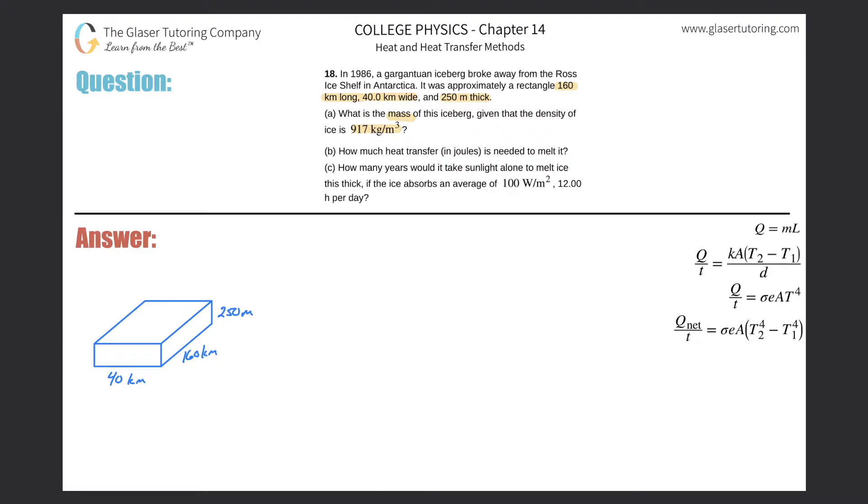Alright, so just recall the simple density formula. Density equals mass divided by volume. They told us the density of ice - the mass is in kilograms and the volume is in cubic meters. First thing I realized is we know the density and we know the volume, but they gave us kilometers and then meters. So we're definitely going to want to convert these both to meters. Let's multiply by 1000. So this is 40,000 meters, and this is 160,000 meters.